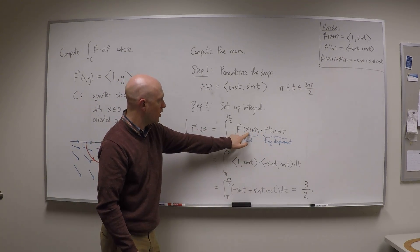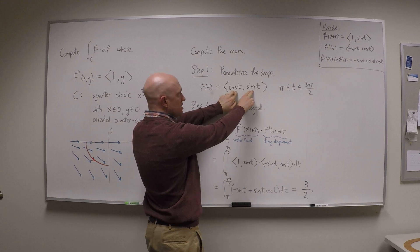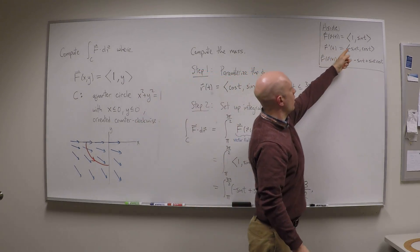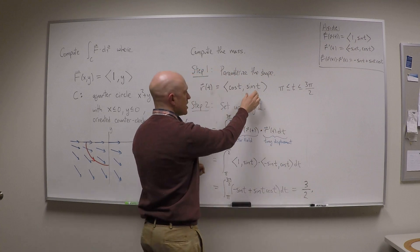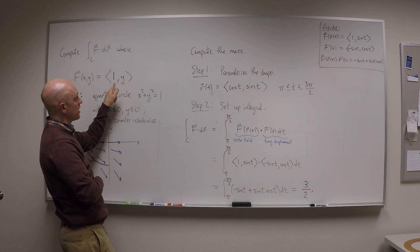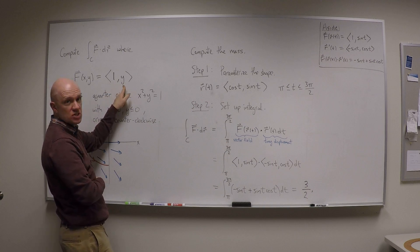So let's see what each of these things are. First of all, f of r of t. r of t is cos t sine t. So f of r of t, I've written it up here, f of r of t is 1 comma sine t. What I do is I take the y of t and I plug it in for y. So I get 1 and then y of t, which is sine t.